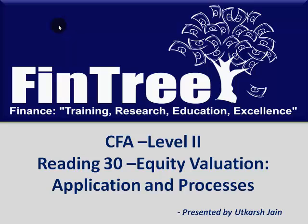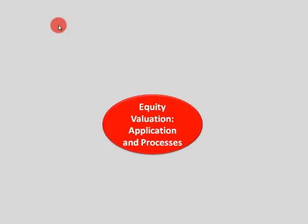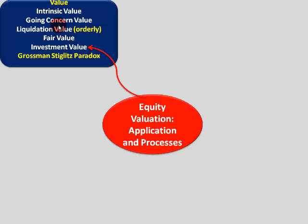So your reading 30 was completely theory-based valuation and processes — this was the first part we looked at. Different definitions of value: intrinsic value means the worth of that particular asset. Then going concern value — assuming that the business will run for the foreseeable future, so that was going concern value.